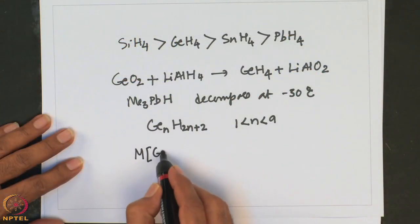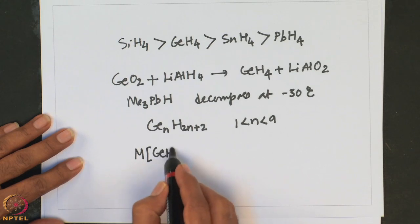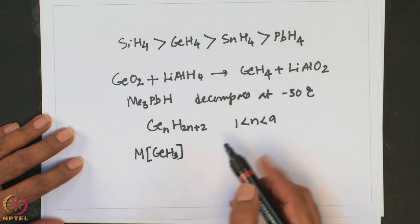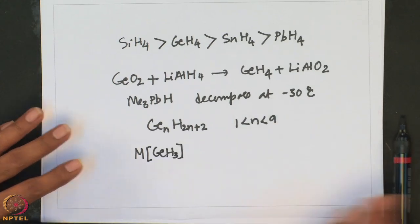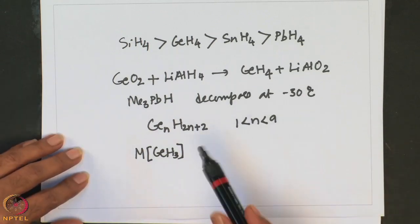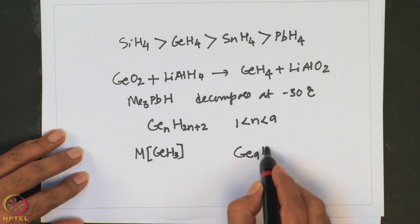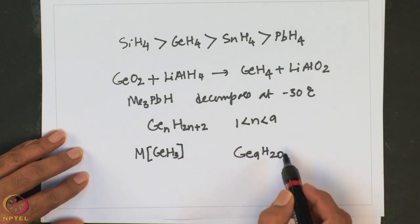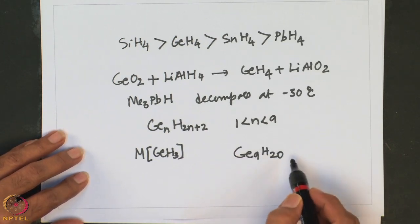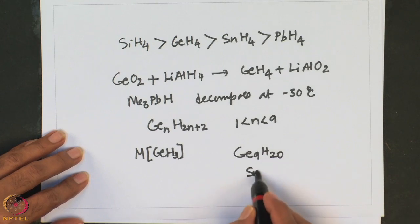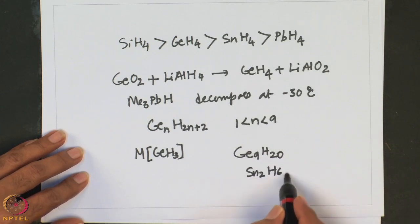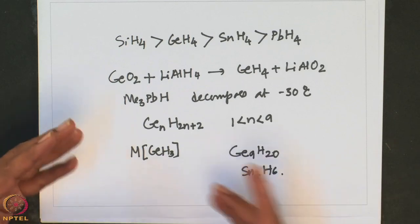Reactions of germane with alkali metals give similar products to those described for silicon. Ge9H20 is known for germanium, whereas in the case of tin only Sn2H6 is known; the Sn3 analog is not known for tin and is also very unstable.